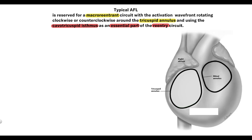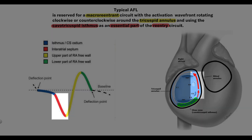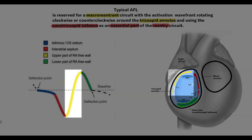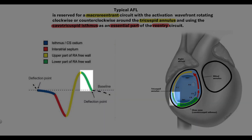Looking at the tricuspid annulus and reentry path: the first portion of the sawtooth wave represents the cavotricuspid isthmus, the slowest and most crucial part of the circle. The second, red part represents movement of the impulse through the interatrial septum. The yellow part represents the upper part of the right atrium free wall, and the terminal green part represents the lower part of the right atrium free wall.